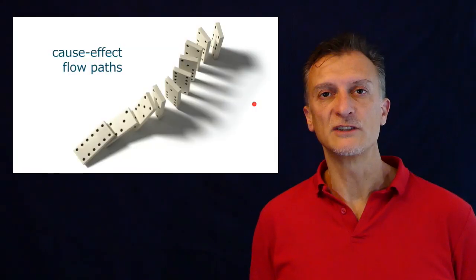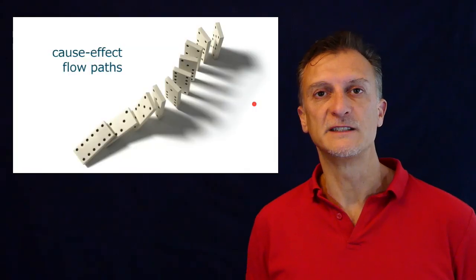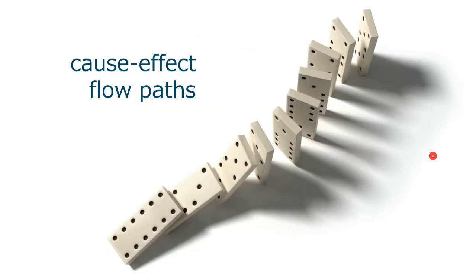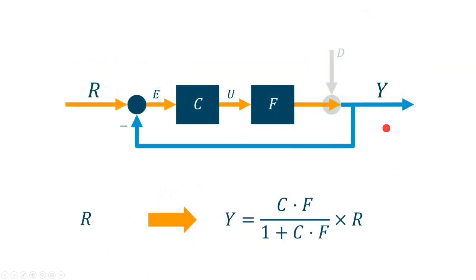Now, let's try to break down the cause effect paths from the reference and the disturbance. So, putting the disturbance D to zero, we have the usual closed loop transfer function from the reference input to the output Y. It gives Cf divided by 1 plus Cf, and this is not new to you.